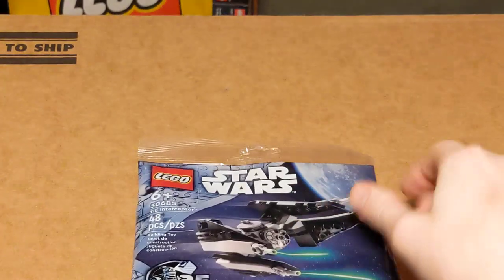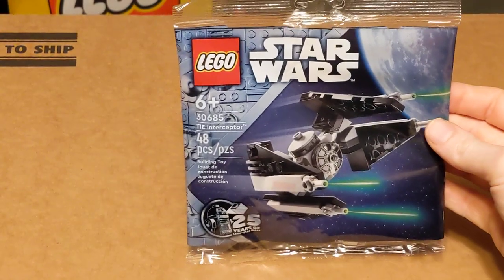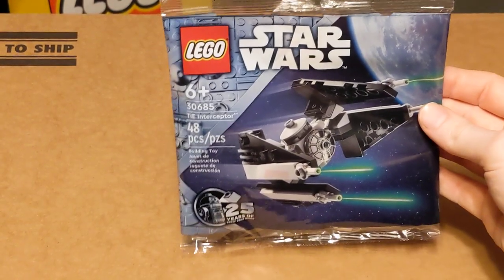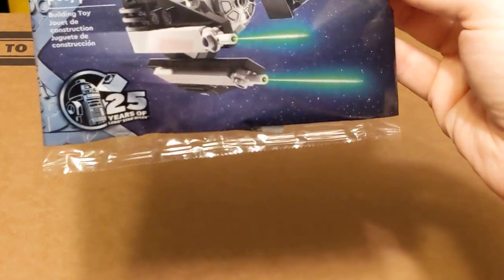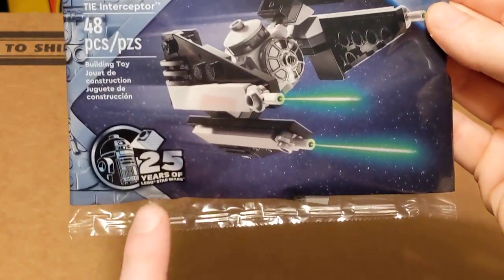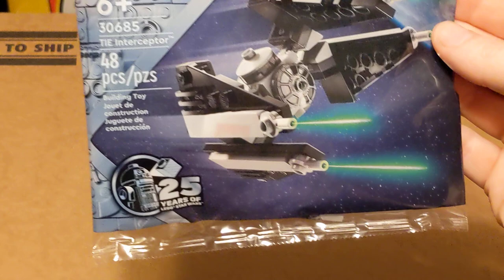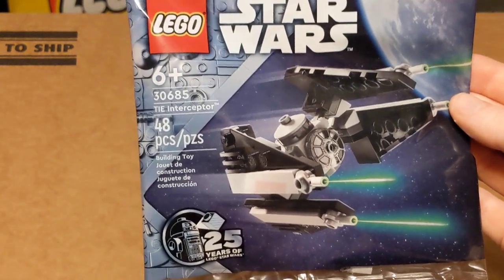I'm talking about the $5 Poly Bag. This is set number 30685, TIE Interceptor, 48 pieces. It is branded with the 25 years of LEGO Star Wars, and it is adorable.